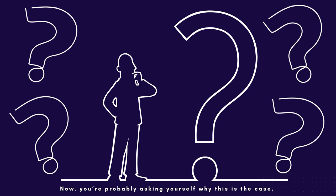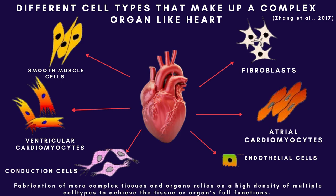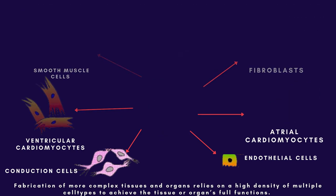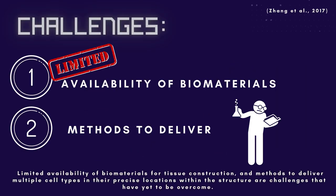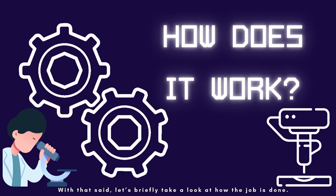And whole organs. Fabrication of more complex tissues and organs relies on a high density of multiple cell types to achieve the tissue or organ's full function. Limited availability of biomaterials for tissue construction, and methods to deliver multiple cell types in their precise locations within the structure, are challenges that have yet to be overcome. With that said, let's briefly take a look at how the job is done.